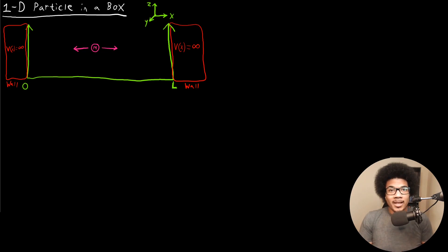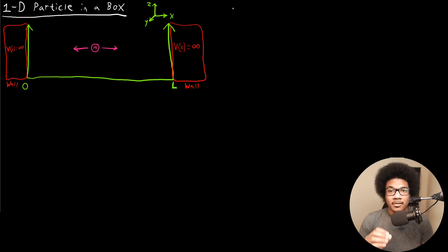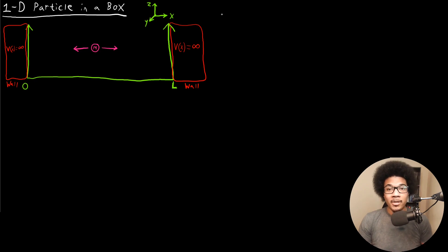In this video, we're going to look at the energy levels and wave function for the one-dimensional particle in the box. In a previous video, we introduced this physical problem — a particle in a one-dimensional box, basically a particle that's free to move inside the box but encounters an infinite potential well at the edges of the box. Since it's essentially a free particle inside the box, a good place to start would be the free particle wave function.